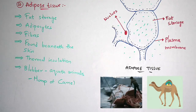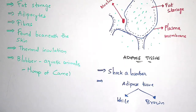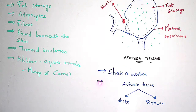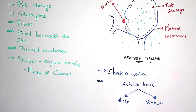Adipose tissue also acts as a shock absorber in the region of palms and soles. Adipose tissue is also classified into brown adipose tissue and white adipose tissue. The people who eat fish normally consume adipose tissue — that is the blubber — which is mainly present in animals like sharks.